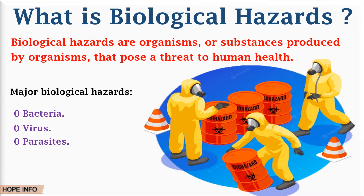Biohazard level one consists of agents that do not generally cause disease in healthy humans. Biohazard level two includes agents that can cause severe illness in healthy humans but can only cause infections through direct contact with infected material or through injection. Biohazard level three involves pathogens that cause serious disease and can become airborne.